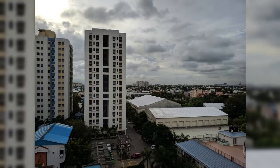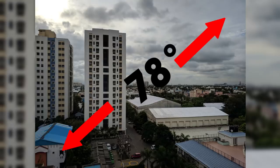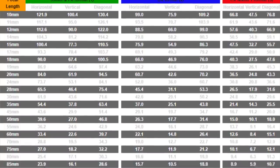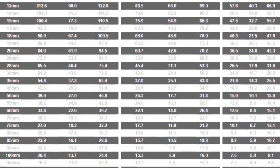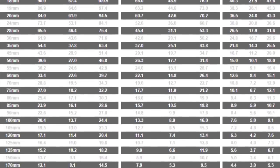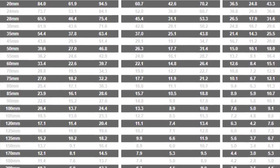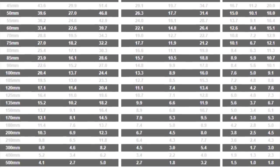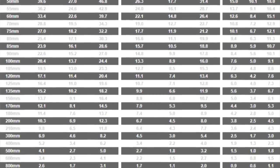Next up, focal length. It basically determines the field of view — the angle between the two opposite corners of an image. Here's a table with different focal length values and their respective fields of view. The primary camera on most phones has a focal length of 24 to 27 millimeters.